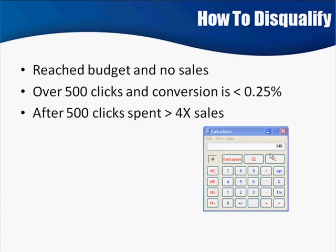Now if it was a $50 commission, that would be a different scenario. $50 commission times four gives us up to $200 — that's a totally different scenario. You've got to run the numbers every single time. Also, if we're getting $0.22 a click times 500, that's $110 in ad spend. If we're making that $35 commission times four, that puts us in the acceptable range as well. So after 500 clicks, see what your sales are and see how much you have spent, then compare against four times the sales.